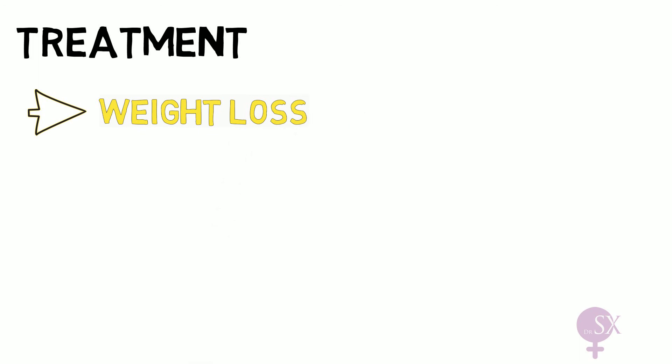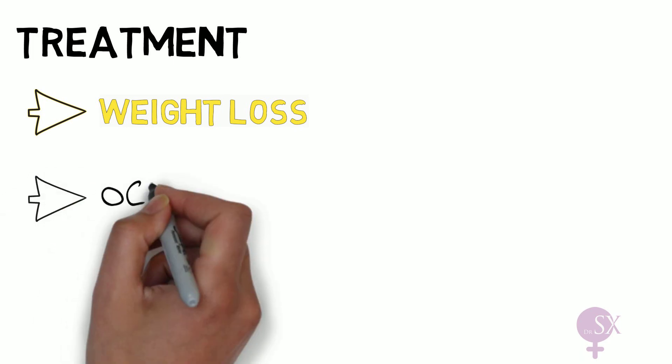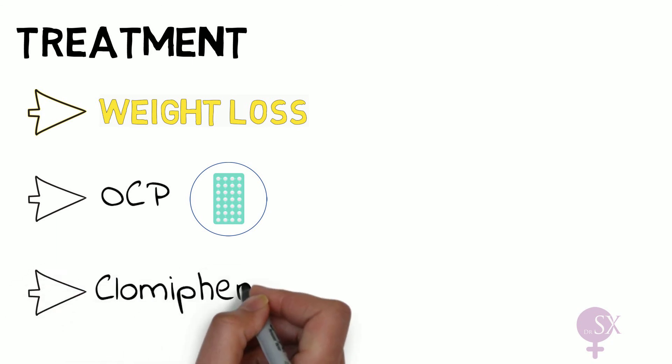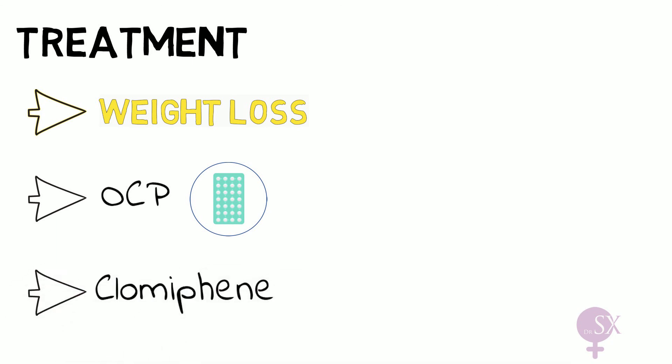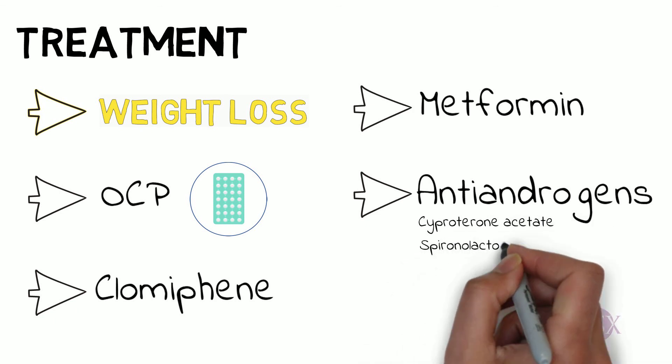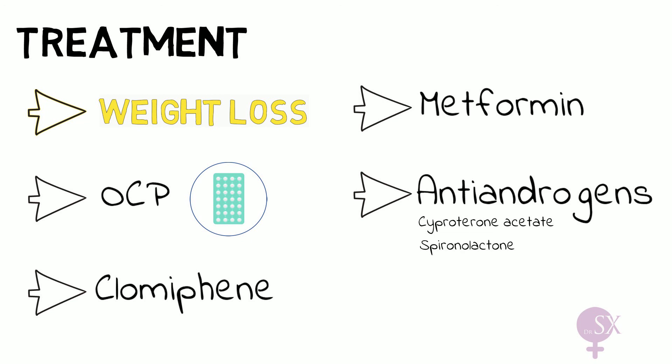For management, weight loss will reduce insulin levels and improve all PCOS symptoms — this is the mainstay of treatment. If fertility is not required, the combined oral contraceptive pill will regulate menstruation and treat hirsutism and acne. Clomiphene may be used to induce ovulation in patients wishing to conceive. Metformin will reduce insulin levels and is also an insulin sensitizer. Antiandrogens such as cyproterone acetate and spironolactone can be used for androgenic symptoms, but patients must avoid getting pregnant while using these drugs.